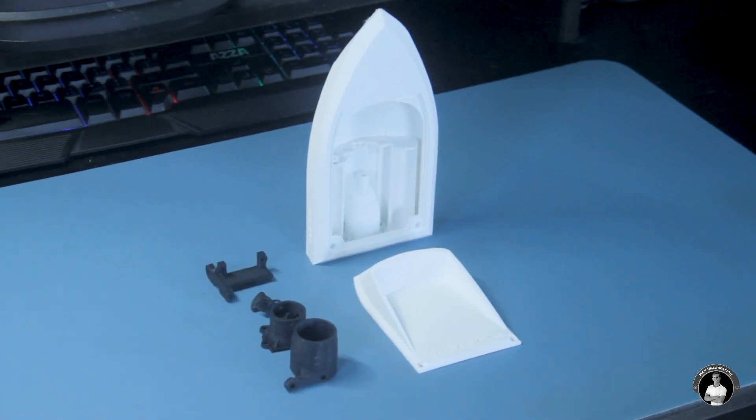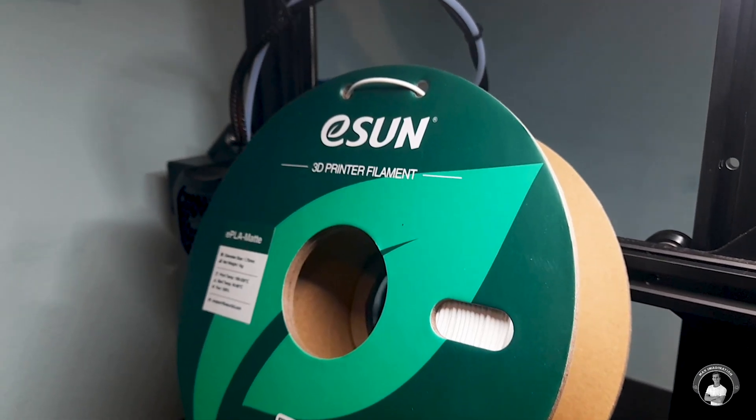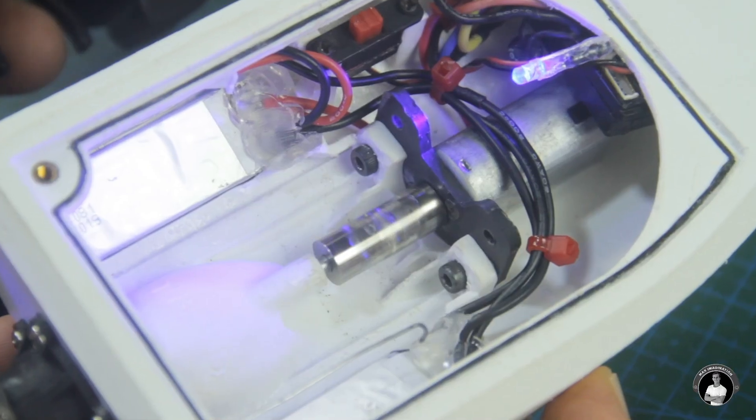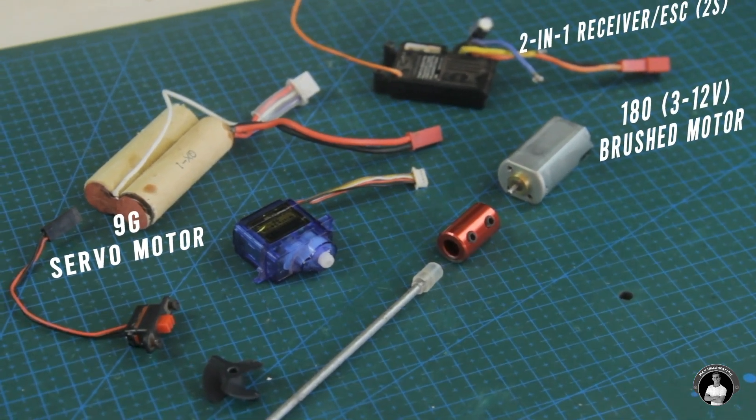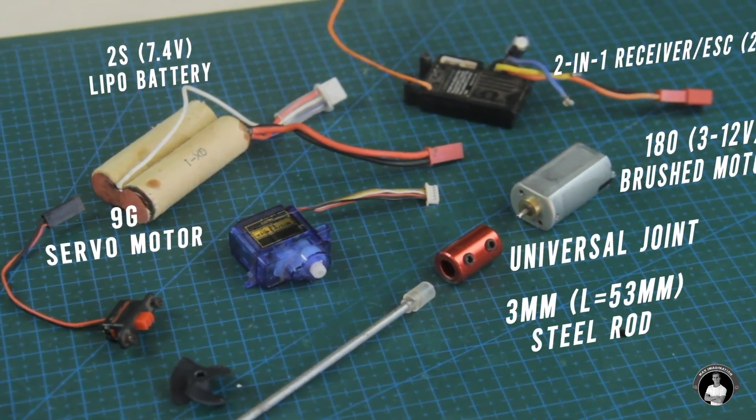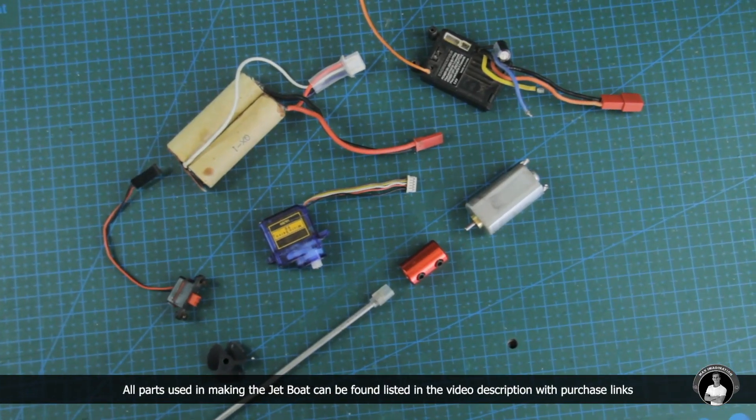Starting with the supplies, for the boat's plastic parts we'll need some PLA filament, preferably two contrasting colors. For the mechanics and electronics we'll use a brushed motor, servo motor, receiver ESC unit, lipo battery pack, universal joint, and a steel shaft. All parts can be ordered through the purchase links in the video description.